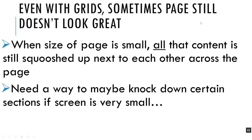The idea behind media queries is that grids are great and our flexible grid nicely acts like an accordion if we're using percentages instead of pixels to make the page adjust. But if we're taking something made for a laptop and squishing it down to a phone screen, having all that content still sit next to each other may make the design pretty smushed and hard to look at. So we can use media queries to knock down certain sections if the screen gets below a certain width.